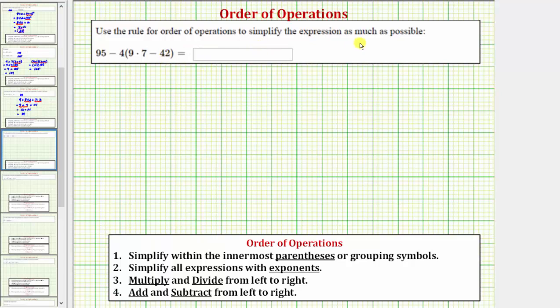We want to use the order of operations to simplify the expression 95 minus 4 times the quantity 9 times 7 minus 42.